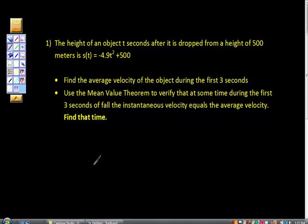So this AP Calculus free response question, this is mean value theorem. The height of an object t seconds after it is dropped from a height of 500 meters is given by the position function S(t) equals negative 4.9t² plus 500.